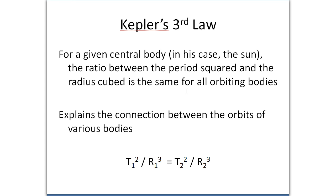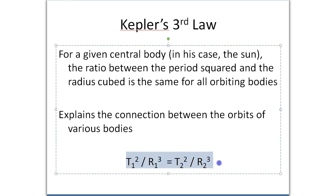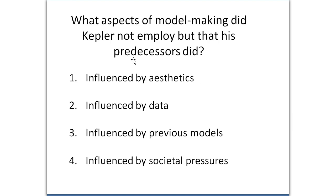So there is a sort of overarching relationship, and this is kind of a teaser for later on, because this was something that Newton really focused in on and was able to figure out the reason for. Now, one of the things that I think is important is that we look at what did Kepler do differently than his predecessors. There were lots of different aspects to model making, and what Kepler did not do is probably almost as important as what he did do.